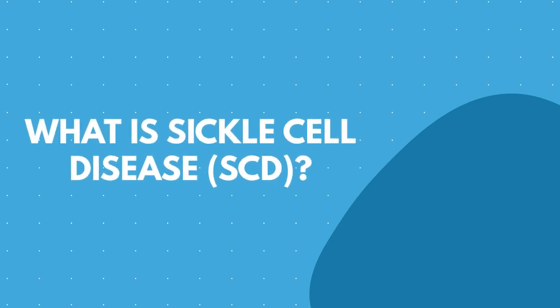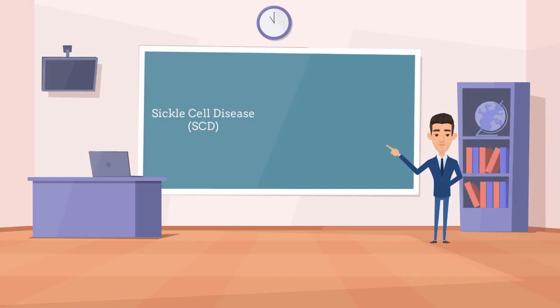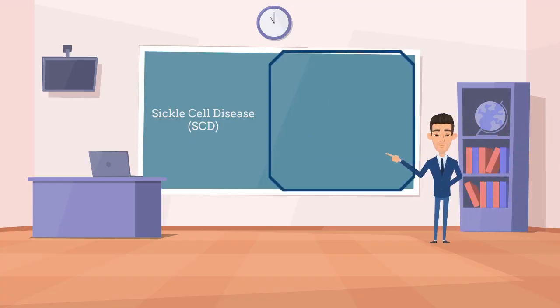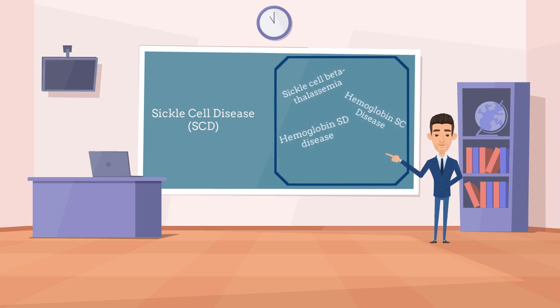CRISPR clearly has a ton of potential, and a lot of it lies in treating and curing diseases such as sickle cell disease. But before that, what is sickle cell disease? Sickle cell disease, or SCD, is a group of genetic red blood cell disorders, and the most common subtype of SCD is sickle cell anemia.